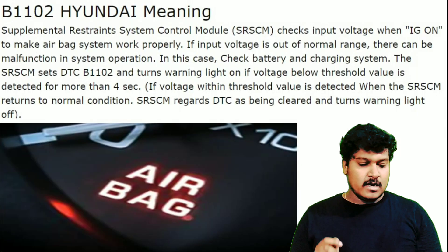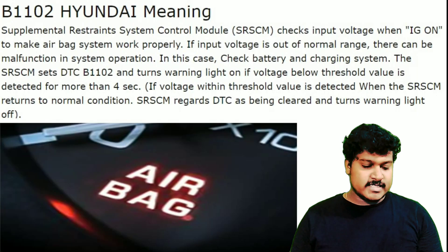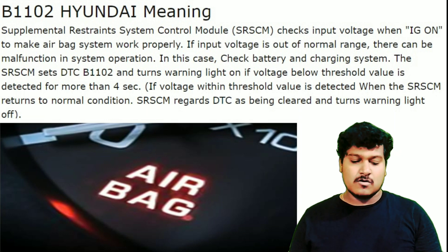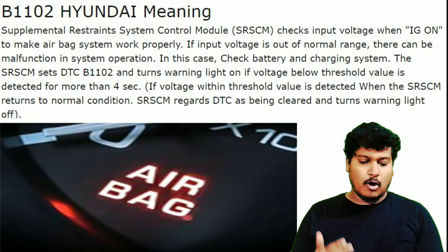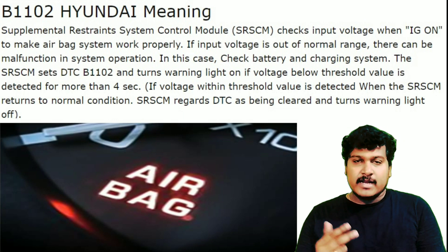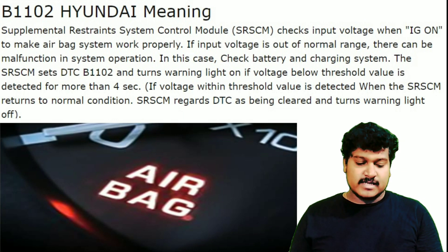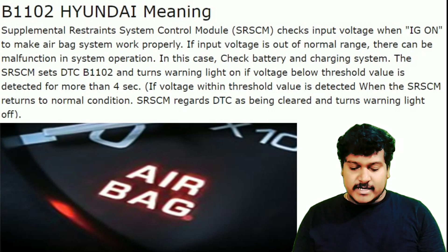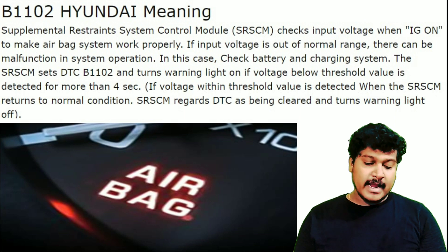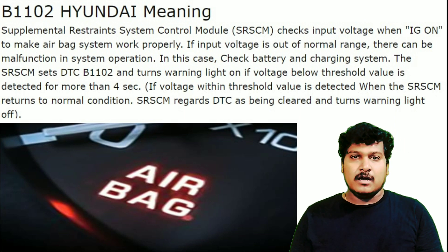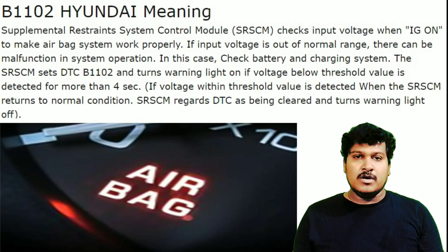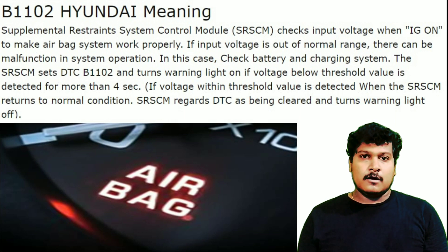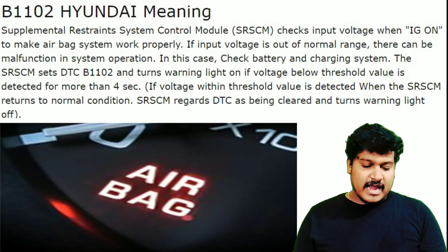The next DTC is BW102. This means it's a Supplemental Restraints System control module issue — this is what was shown as SRS or airbag in the scanner. SRS stands for Supplemental Restraints System Control Module. It checks the input voltage when the ignition is on to make the airbag system work properly. For example, if the airbag is expecting a certain voltage but that supply voltage is not available, it may trigger this particular DTC.